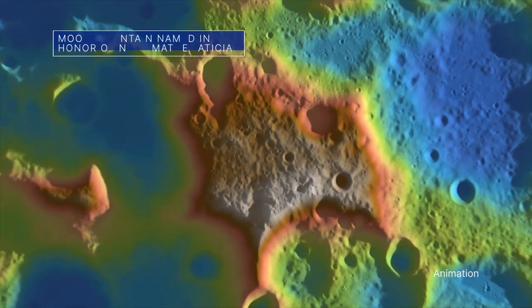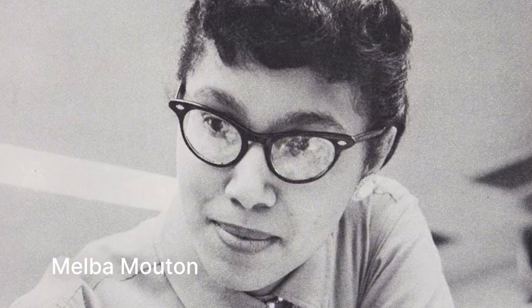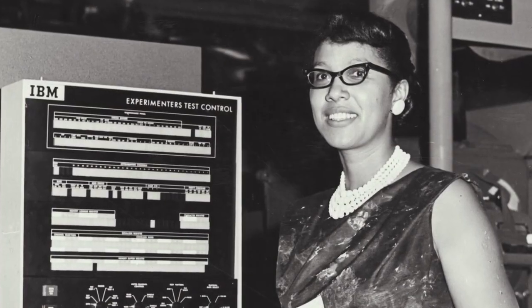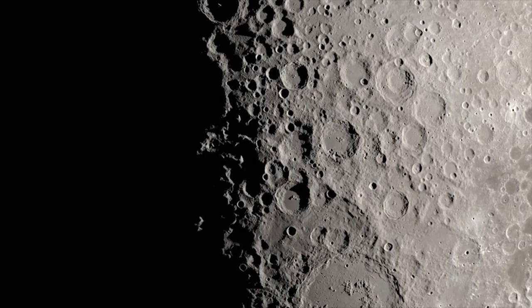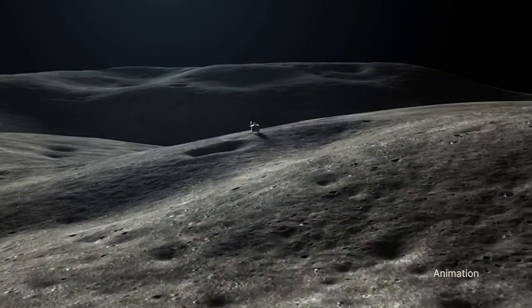A Mesa-like mountain near the moon's south pole has been named Mons Mouton after NASA mathematician Melba Mouton. In the early days of NASA, she led a group of mathematicians whose calculations helped track spacecraft in orbit. Mons Mouton is adjacent to the site at which our Viper mission will land and explore as part of our Artemis program.